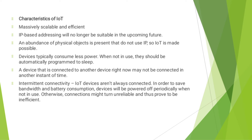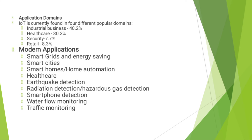Characteristics of IoT: IoT is massively scalable and efficient. IP-based addressing will no longer be suitable in the upcoming future, as an abundance of physical objects do not use IP, so IoT is made possible. Devices typically consume less power; when not in use, they should be automatically programmed to sleep. A device connected to another device right now may not be connected at another instant — this is intermittent connectivity. IoT devices are not always connected in order to save bandwidth and battery consumption, and devices will be powered off periodically when not in use; otherwise, connections might turn unreliable and inefficient.